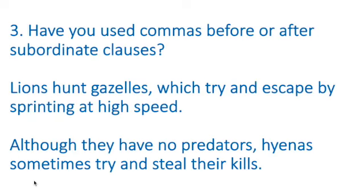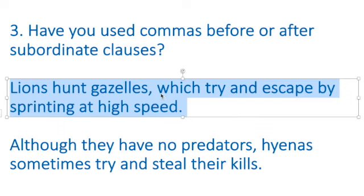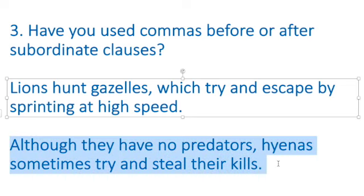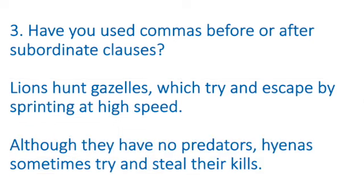Number three: have you used commas before or after subordinate clauses? Take a look at this sentence. 'Lions hunt gazelles' — this is a relative clause because it's got 'which'. If it uses which, where, who, or whom, then we use a comma. For example: 'Lions hunt gazelles, which try and escape by sprinting at high speed.' And also look at this subordinate clause: 'Although they have no predators, comma, hyenas sometimes try and steal their kills.' So reread your work — if you've used a subordinate clause, you need to have commas. Press pause and then come back for number four.